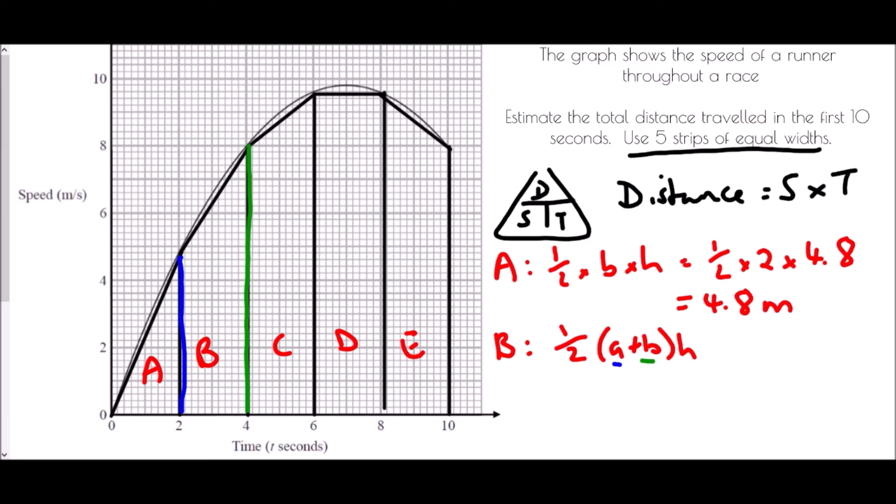And so again, the height is the same as we had previously. It's another 2. And so we've got a half, brackets. This height here, well, we've already measured the first one as 4.8. But the second height, the green one, well, that is at 8. And it's going to be multiplied by the height, which is 2. And so we can actually discount here the half times the 2, because that just makes 1. And so we've got 4.8 plus 8. Well, that is 12.8 metres.